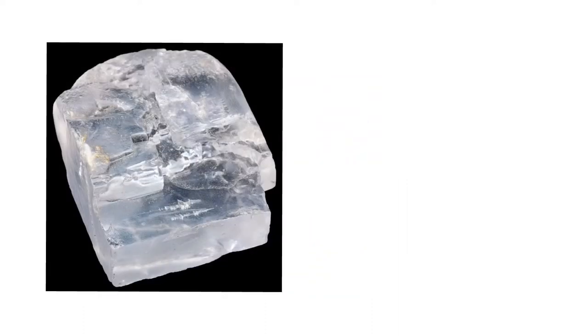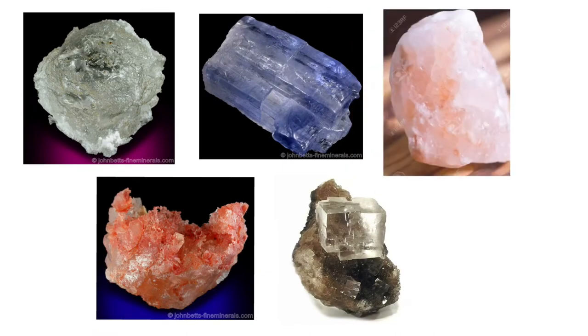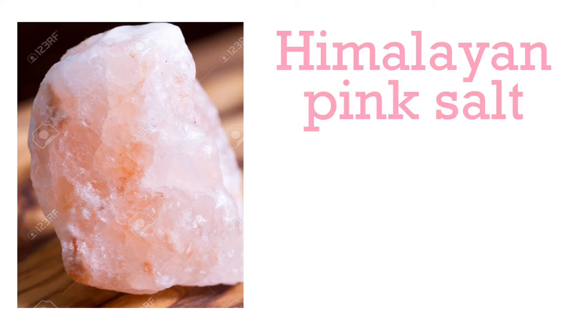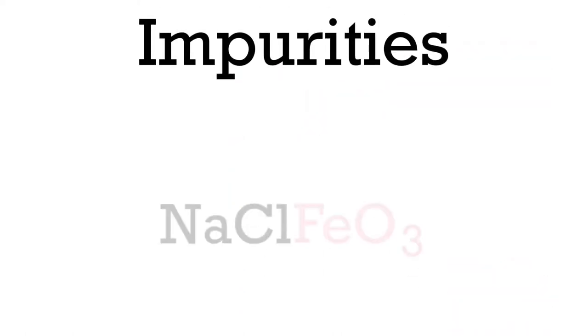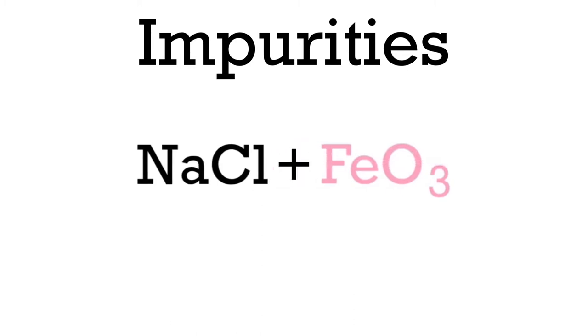The color of pure sodium chloride is a transparent white, but it can sometimes be other colors when it has a little bit of other molecules in it. For example, Himalayan pink salt is a type of halite tinted pink from traces of iron oxide. Impurities like these aren't part of the chemical composition throughout the entire material — they're just in there a little bit.